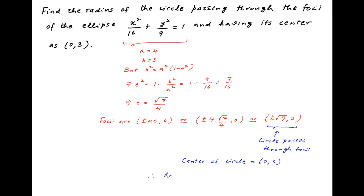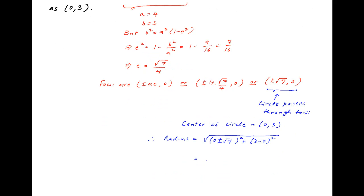Therefore, the radius of the desired circle is equal to the square root of (0 ± √7)² + (3 - 0)², which is equal to √(7 + 9), which is equal to √16 or 4 units, which is the required answer.